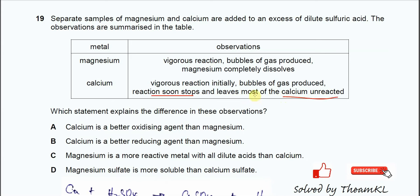Some of you might think about the reactivities of group 2 down the group. Calcium is more reactive than magnesium when it reacts with water, but this is different. In this question, both metals now react with sulfuric acid, not water.